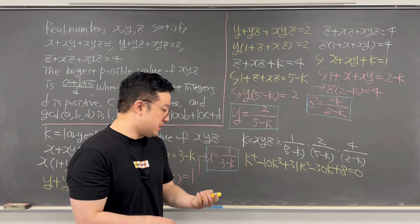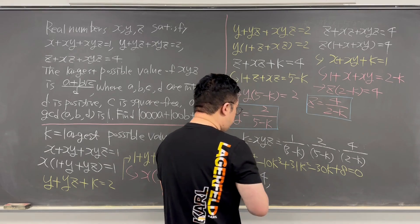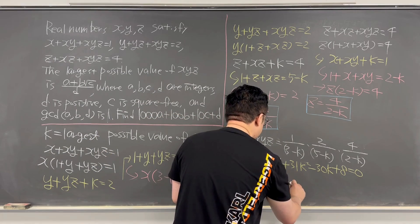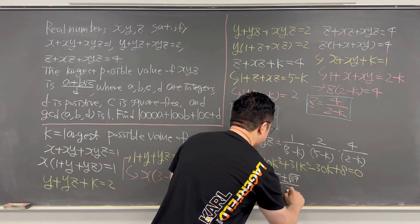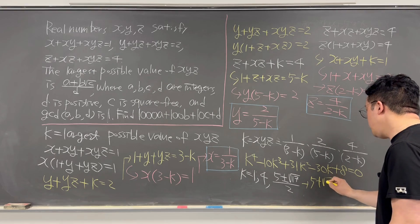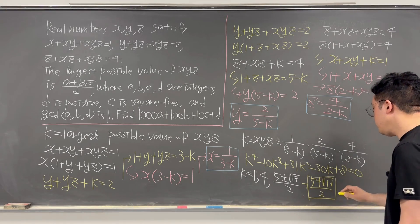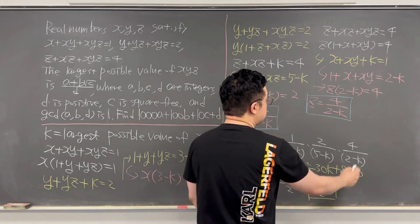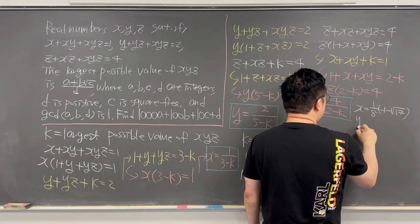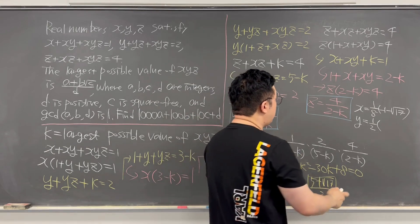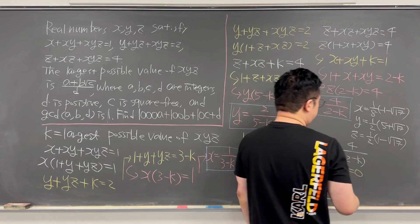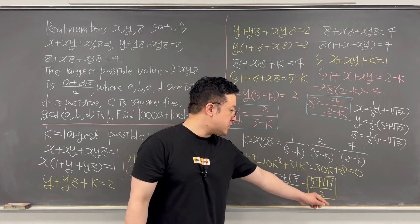Using the rational zero theorem, we can find K = 1 and K = 4 as real roots quite easily. After factoring those out, we get a quadratic equation, and using the quadratic formula we get K = (5 ± √17) / 2. Choosing the biggest value out of those four, it is (5 + √17) / 2.